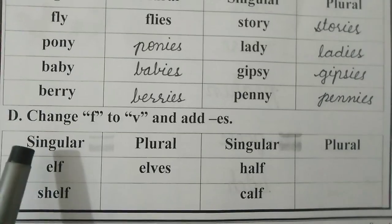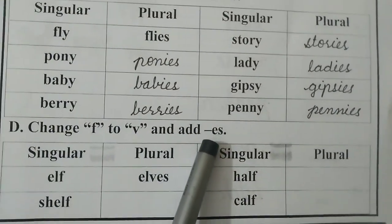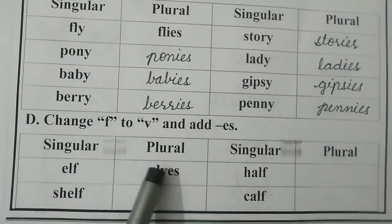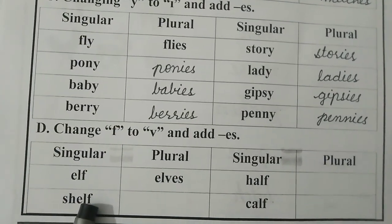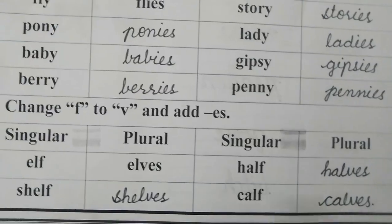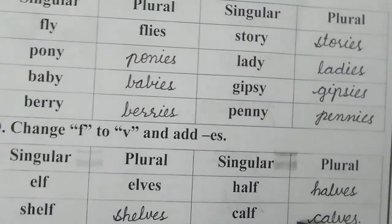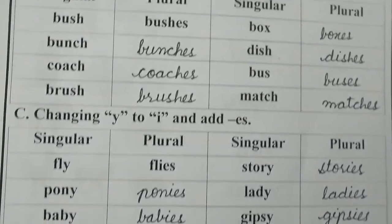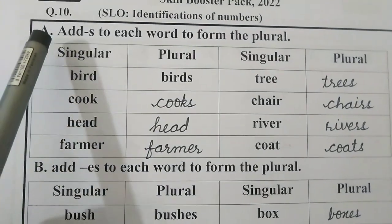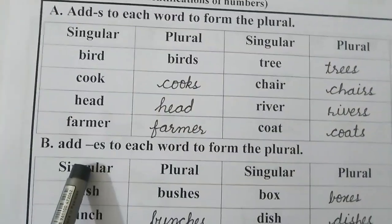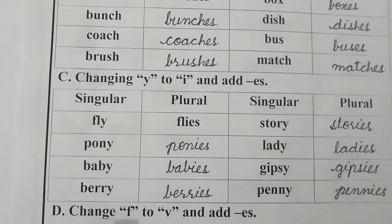Our next and last point is Part D: change F to V and add ES. Like: elf — elves. Shelf — shelves. We remove F and add VES. Half — halves. Calf — calves. This was all for today. I hope you understand the concept of singular and plural. It is compulsory for you to learn these rules to make a plural form, so that you can easily change singular into plural form. Thank you so very much.